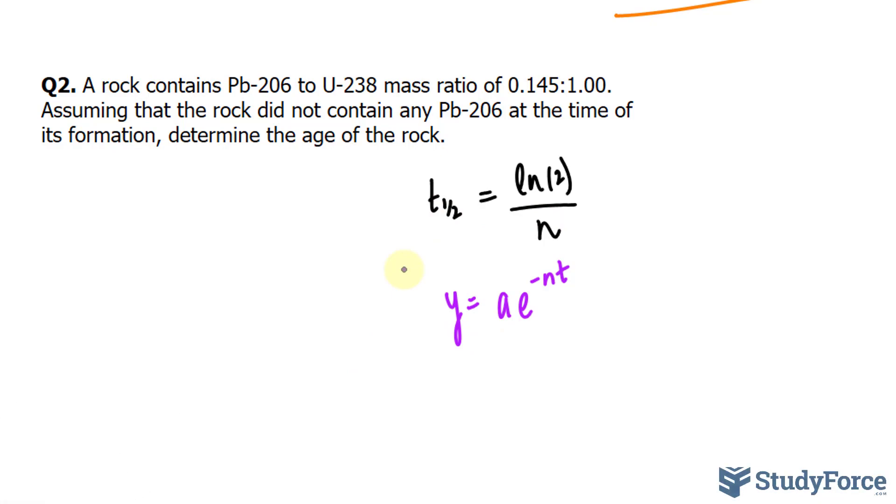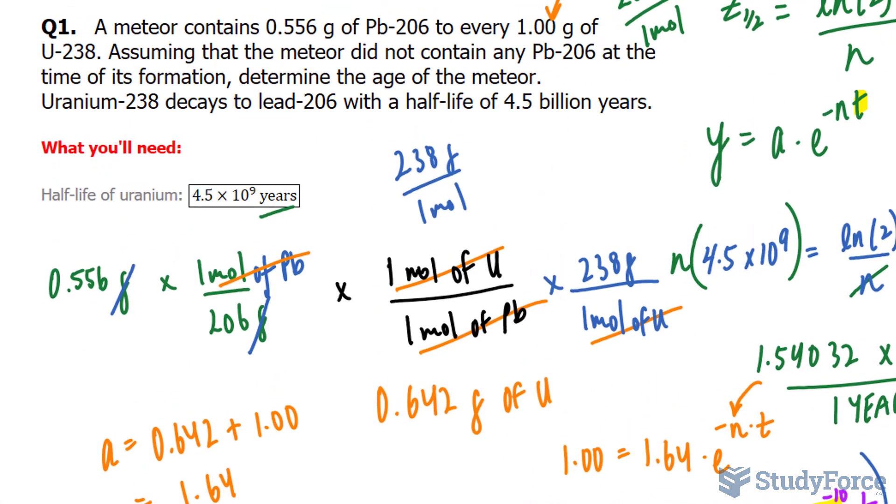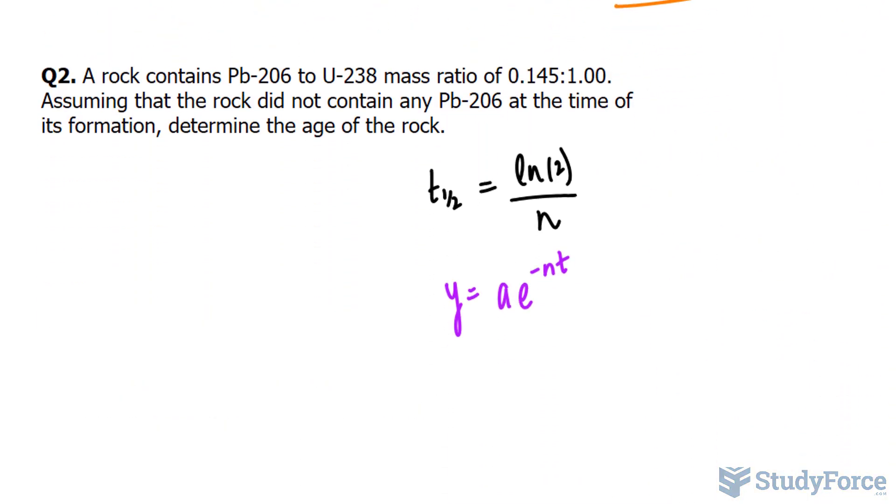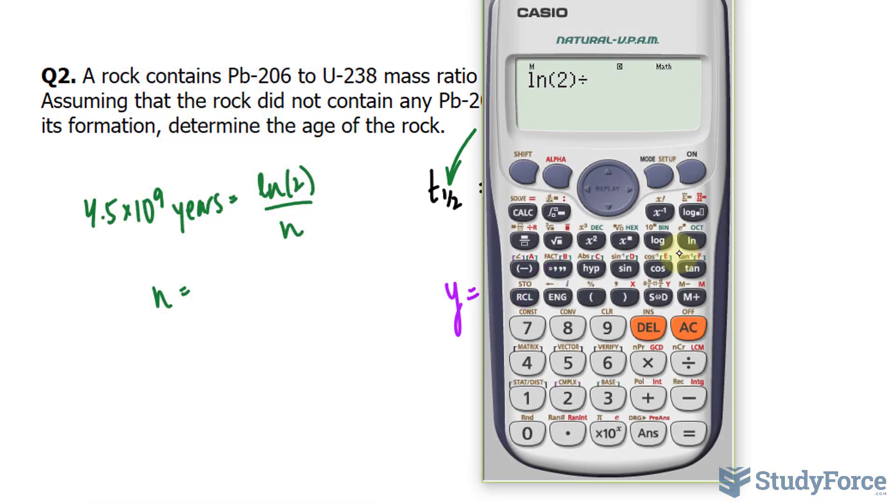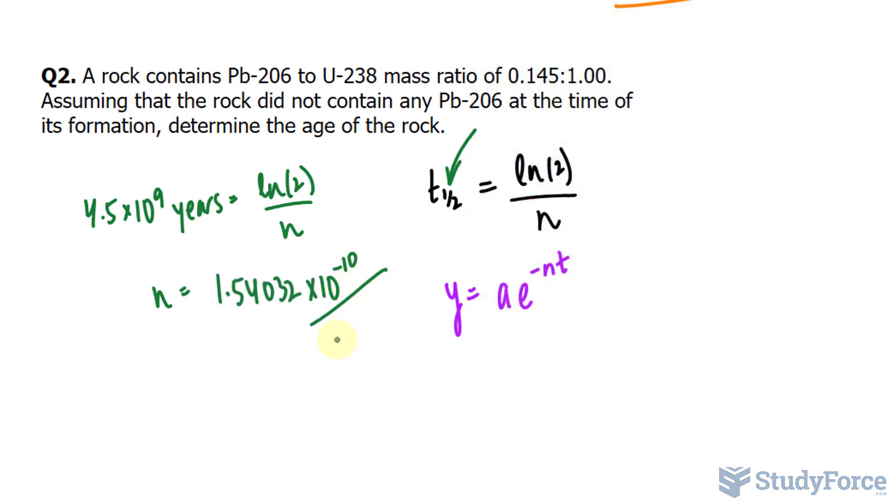n will be found by substituting the half-life of uranium, which we knew in question number 1 to be 4.5 times 10 to the power of 9. So we'll replace that right into there, and then isolate for n. So let's go ahead and do that first. I'll replace 4.5 times 10 to the power of 9 years equals ln(2) over n, and n is equal to, let's use our calculator, ln(2). I'm assuming that you already know how to solve for n, and if you don't know how, just watch question number 1. More details there. And we want to put this number in parentheses, so 4.5 times 10 to the power of 9. And we end up with an n value of 1.54032 times 10 to the power of negative 10. The units for this number are per one year.